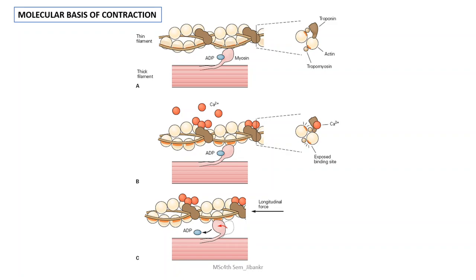To understand this, I will highlight the structural components of the thick and thin filament. The thin filament mainly consists of actin polymers — there are two polymers of actin — and these two polymers are arranged as a helix. In the groove of the helix, a filamentous protein called tropomyosin is present.